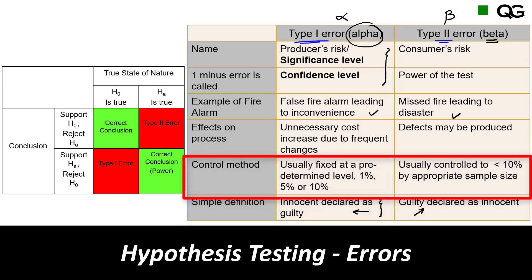Type 1 error is something you decide first — this is an important aspect of hypothesis testing. You fix a predetermined alpha value: one percent, five percent, or ten percent. If things are serious and could lead to injury or accident, you go for one percent alpha. If mistakes are not very serious and are acceptable once in a while, you might choose ten percent alpha. Five percent is the most common.